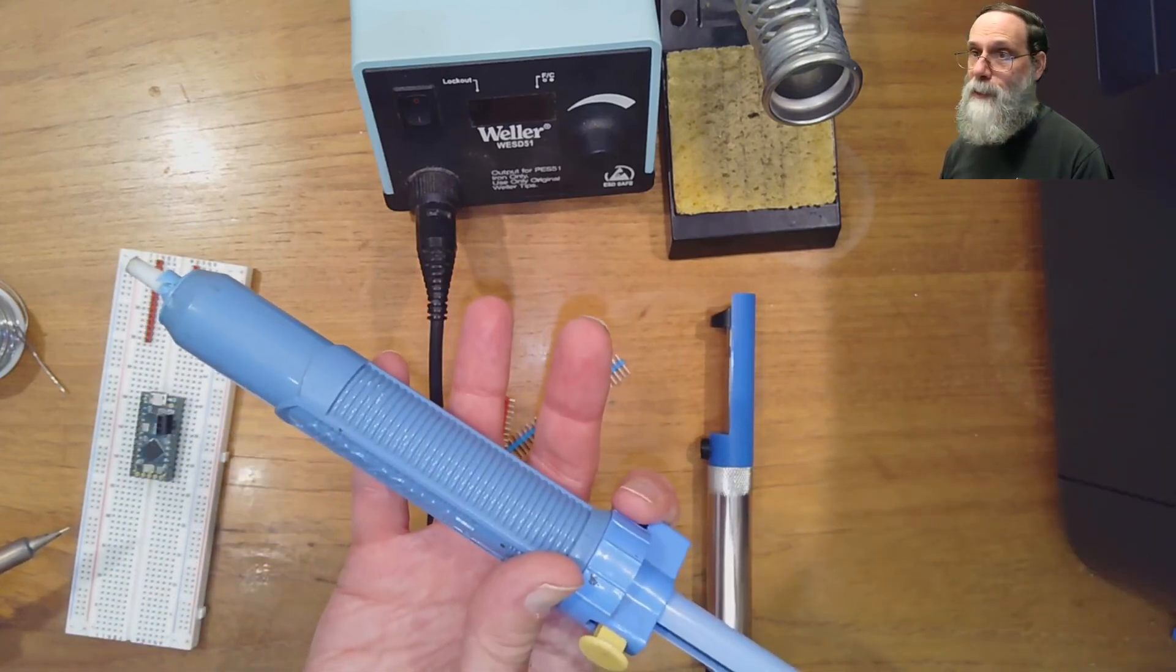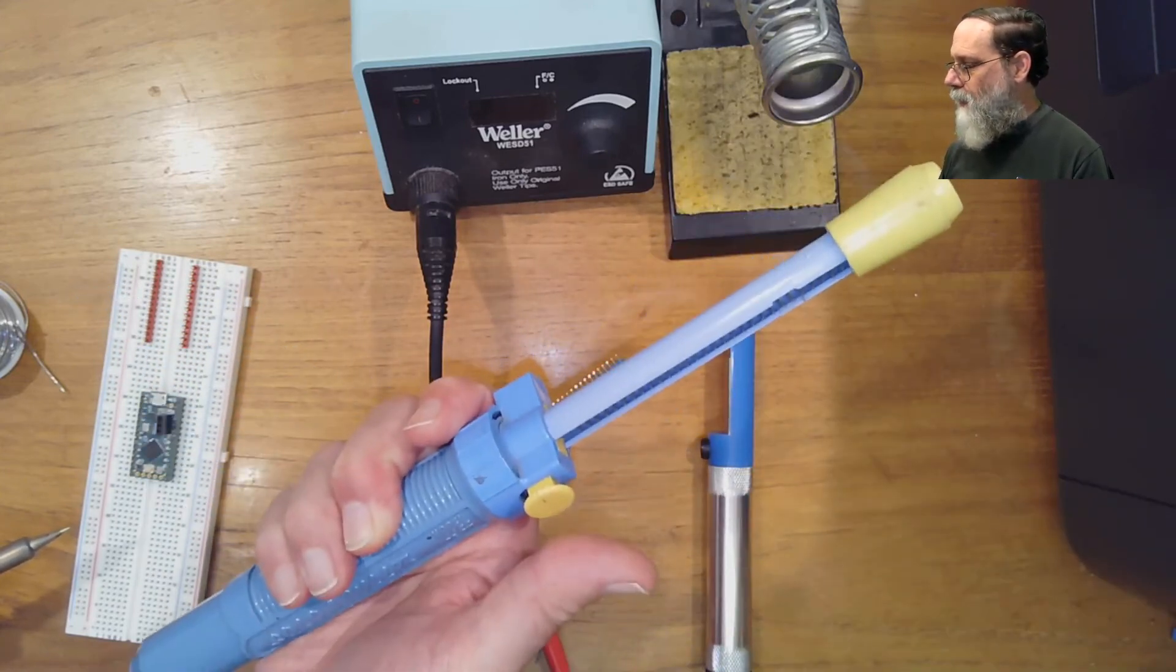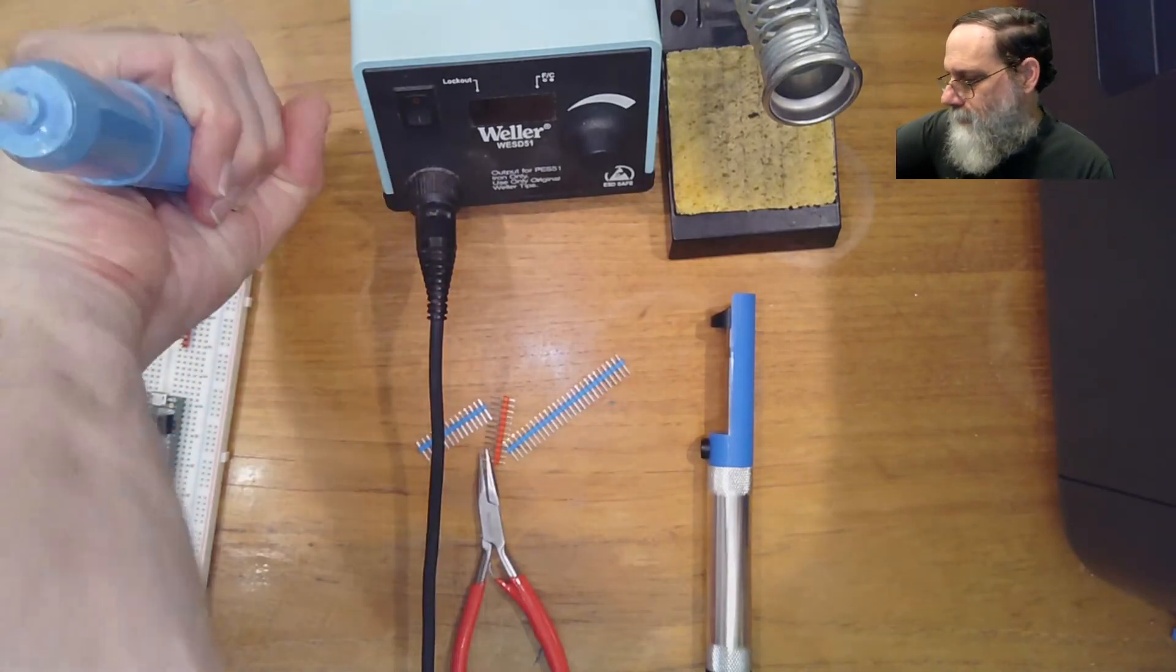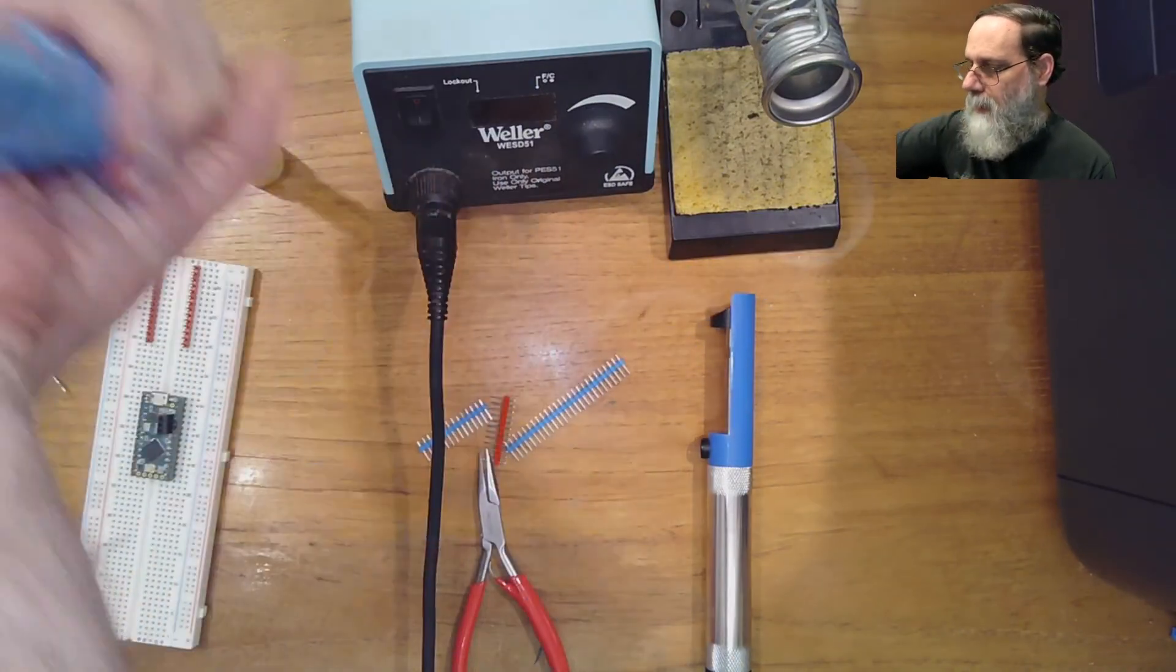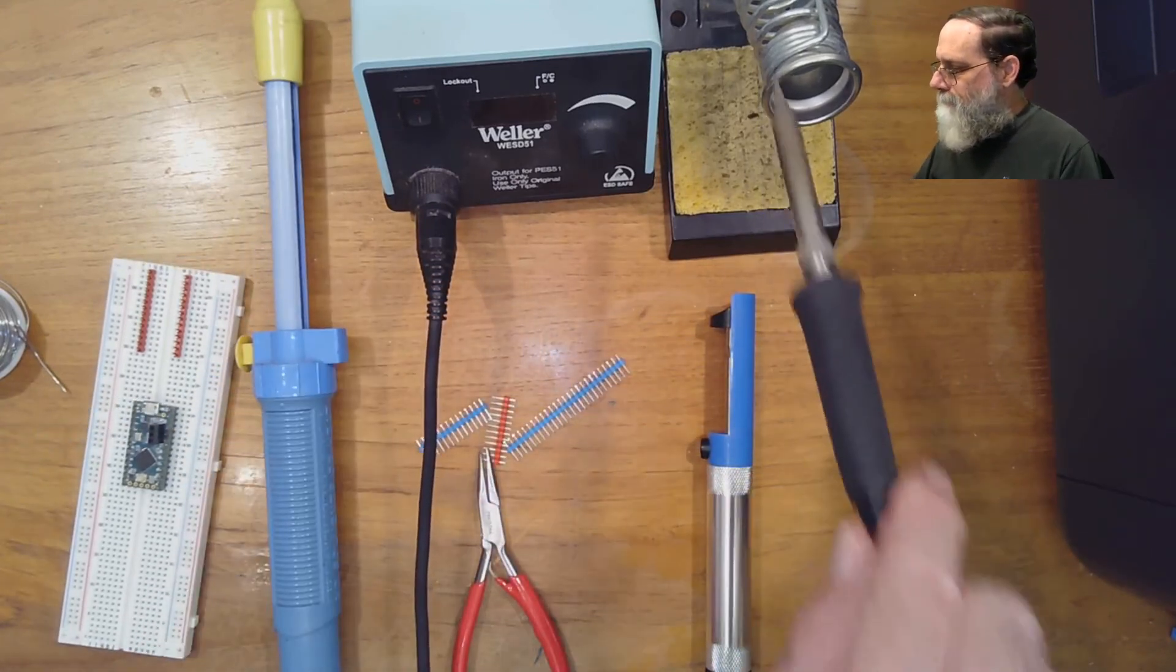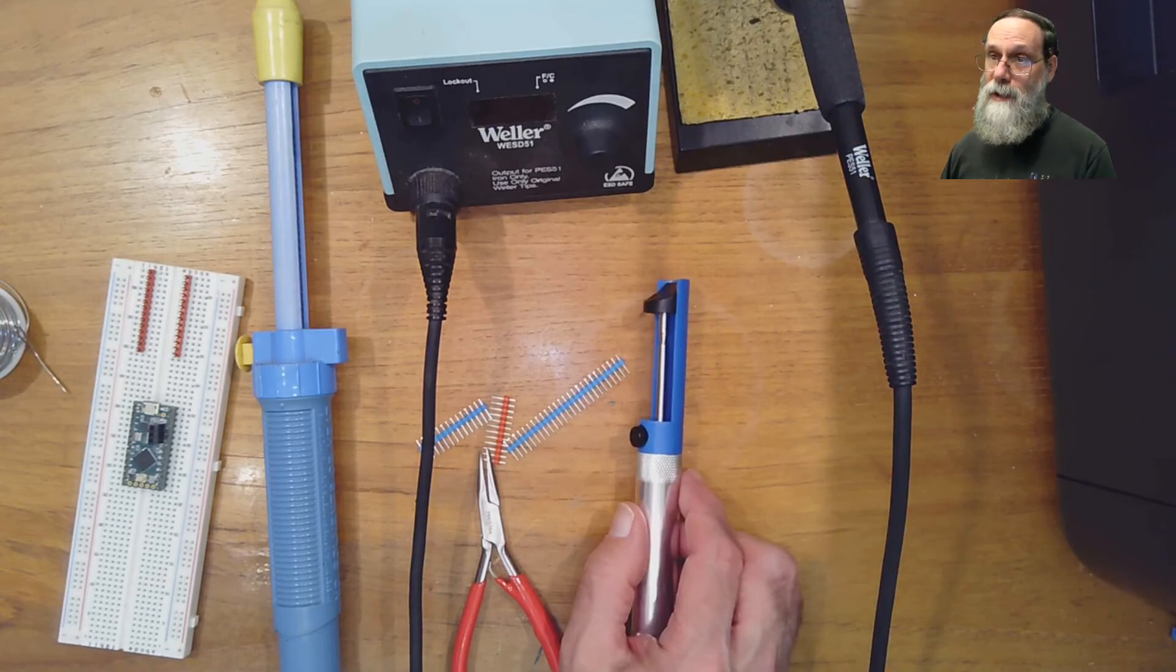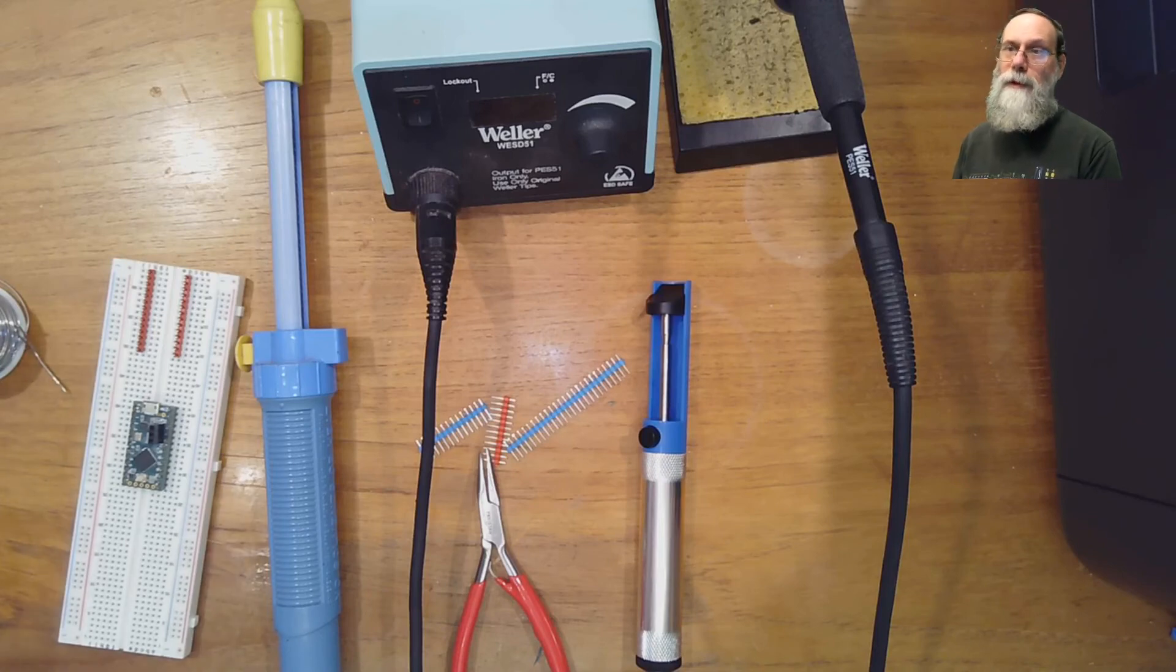This larger solder sucker works more or less the same way. It's got a somewhat larger volume of air that it pulls in at once, so you can clear up bigger solder messes with it. It's a little bit harder to prime because you can't just push your thumb here, but you can push it against the bench to prime it. And then again, the button is one thumb pressing. Hopefully you won't need to use the solder sucker too much because it is possible when you're unsoldering things to damage the board to pull the copper pads off the board. And then generally the board is unsalvageable.